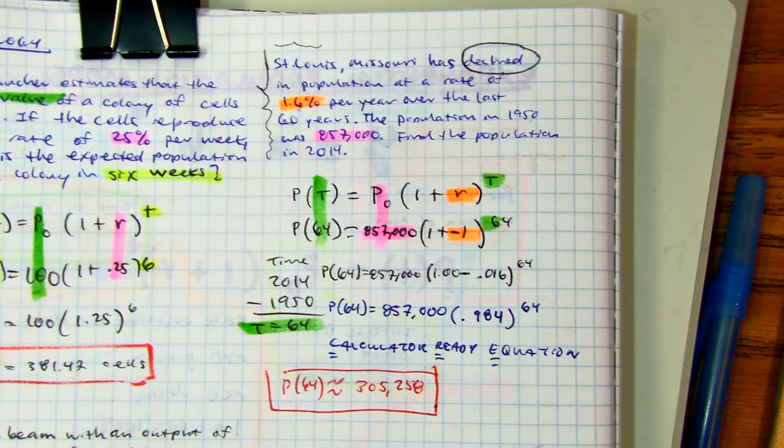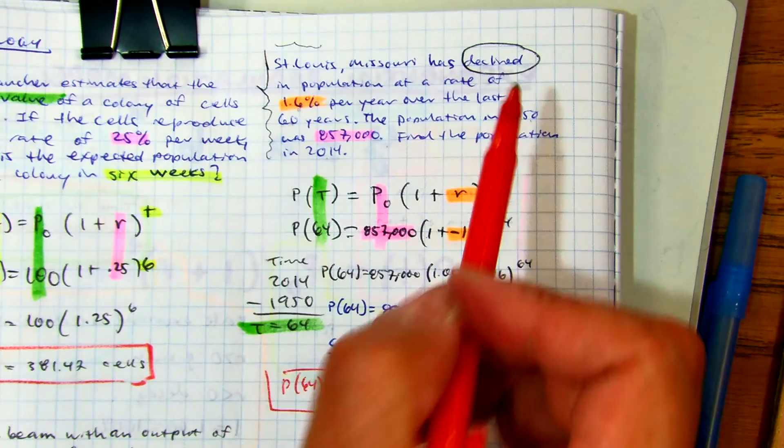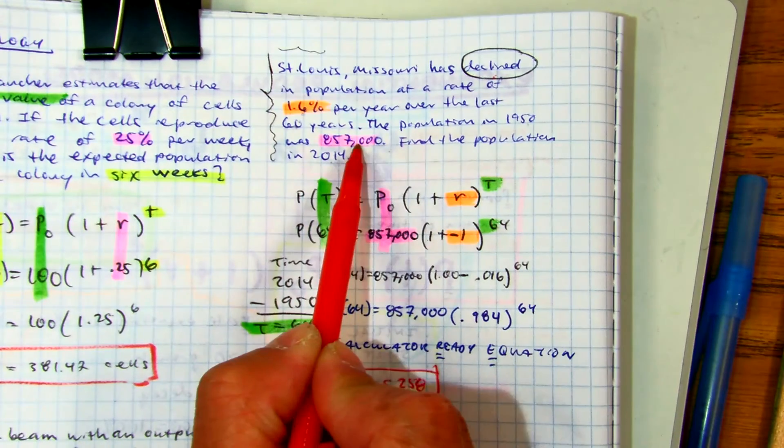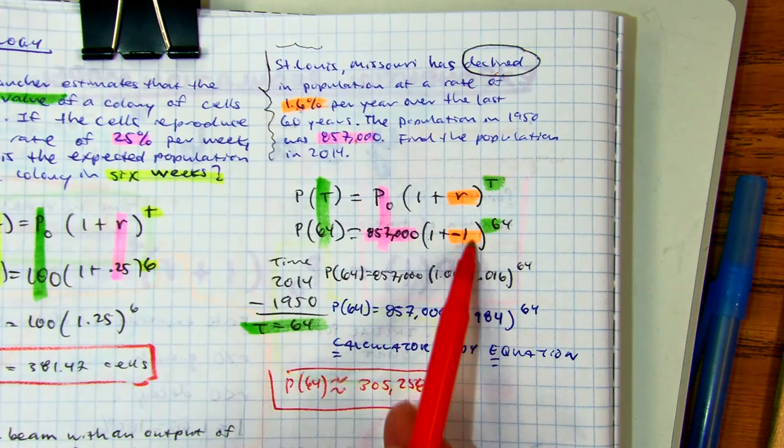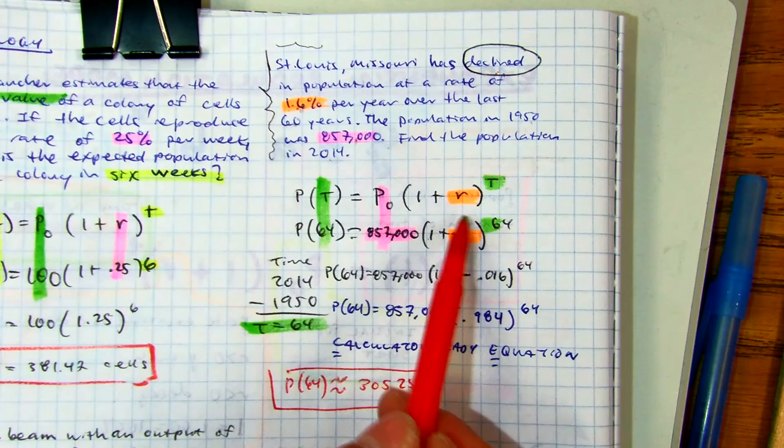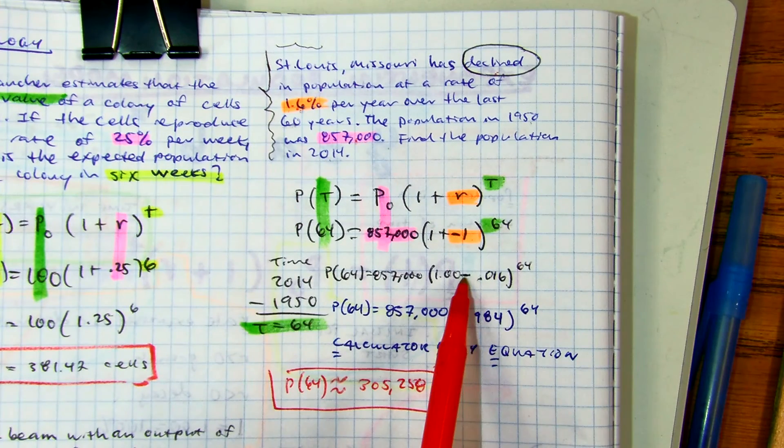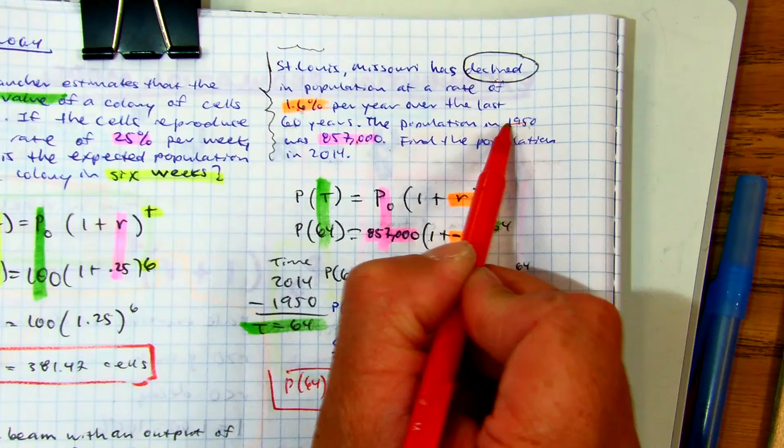So just think about it, it's a decline so it has to be a number smaller than the original. You're changing your percent into a decimal, because it's a decline your rate is negative, and then time is from 1950 to 2014.